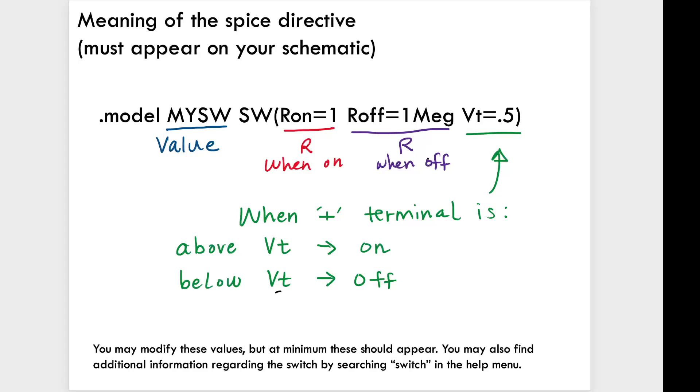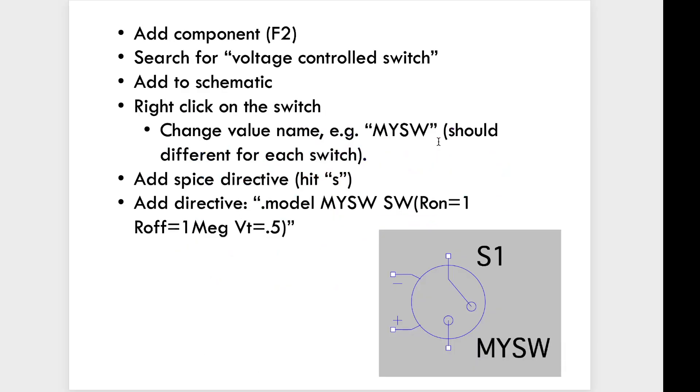There's at least one more value that you can write in here. And if you want to learn more, you can search in the help. So again, the summary, add a component, search for the switch, add it to your schematic, right click on the switch, you need to change the value name.